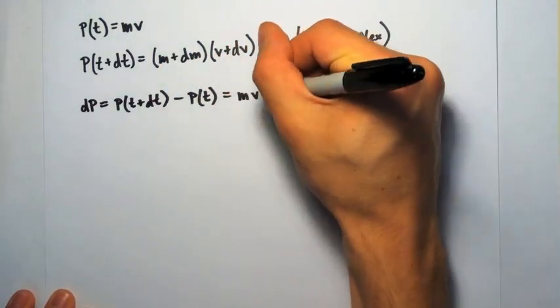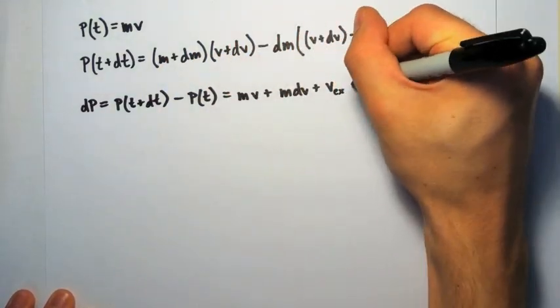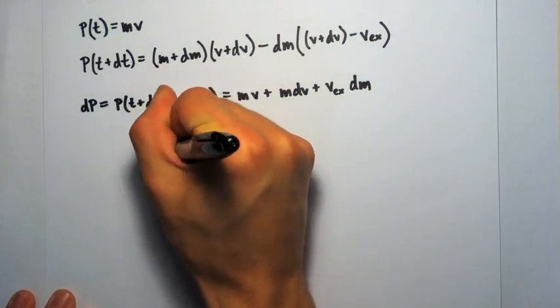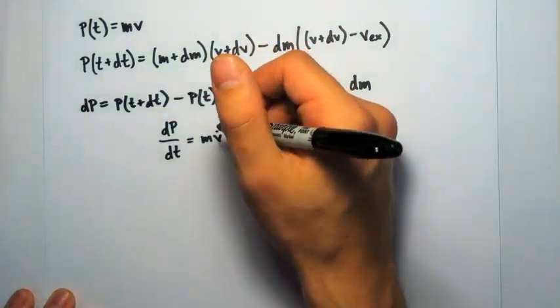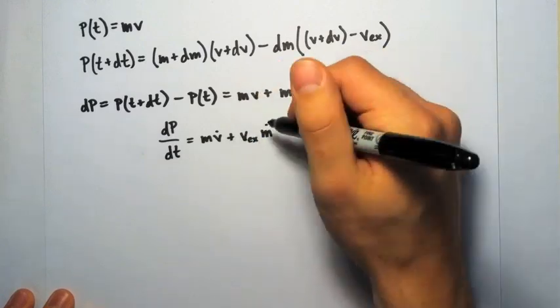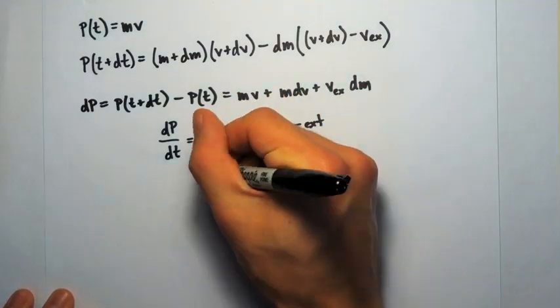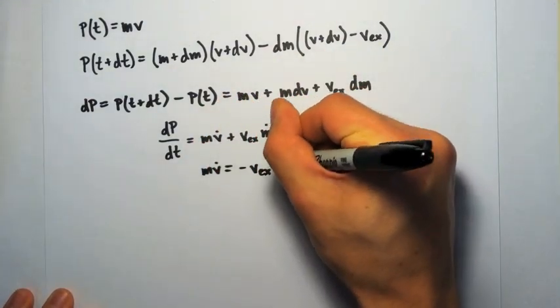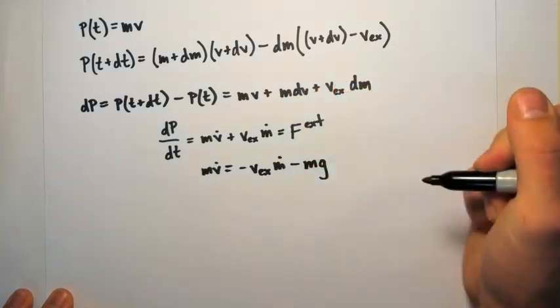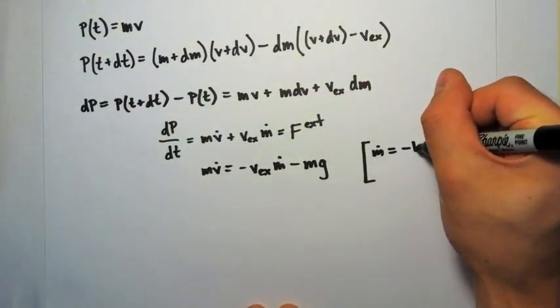dp is just the difference of the two terms above, and then dividing by dt, we get the rate of change of momentum, which is equal to our external force. In our case, the external force is obviously the force of gravity, so we're going to put the minus mg term there.